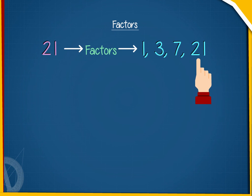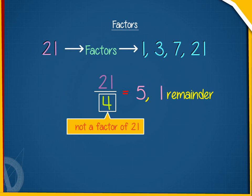But if we divide the number 21 by 4, we get the remainder 1. And so, 4 cannot be a factor of 21.